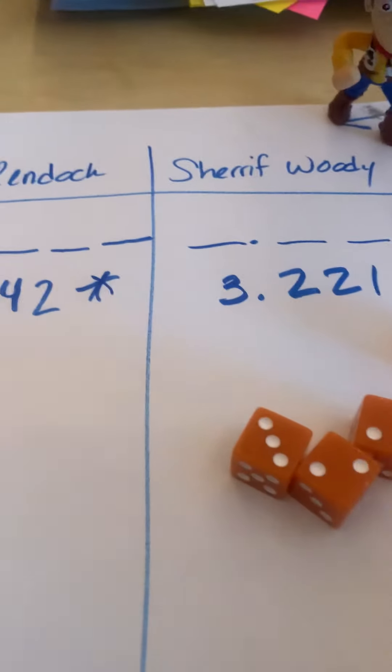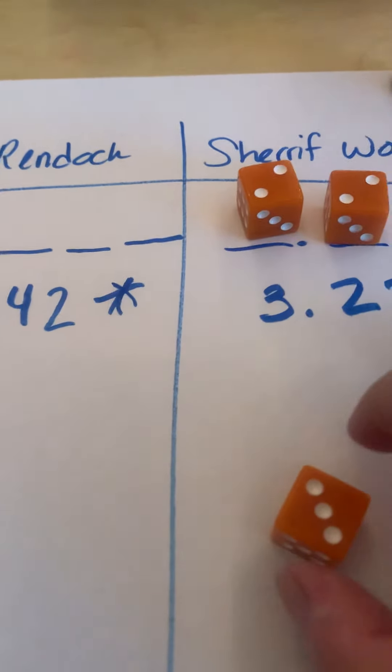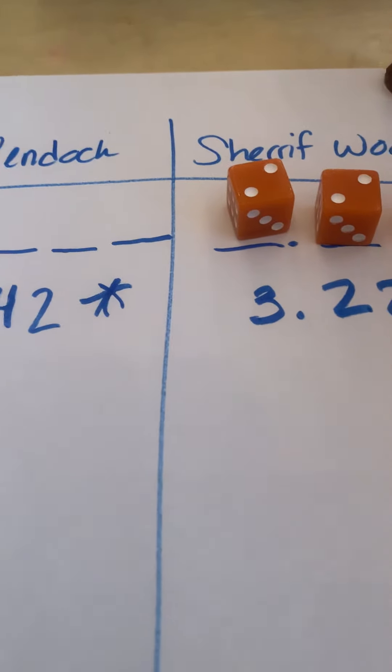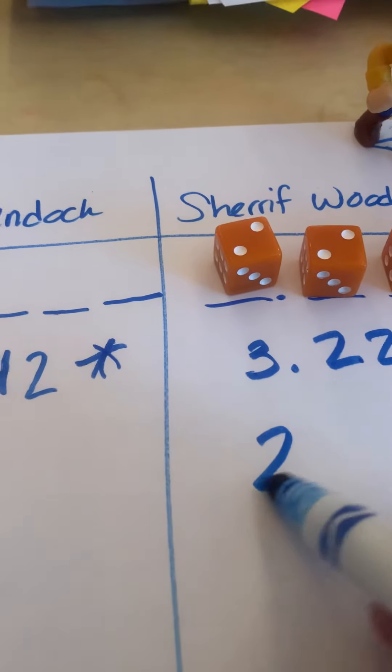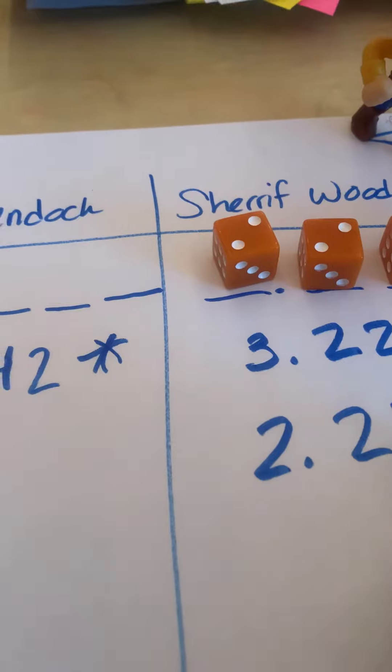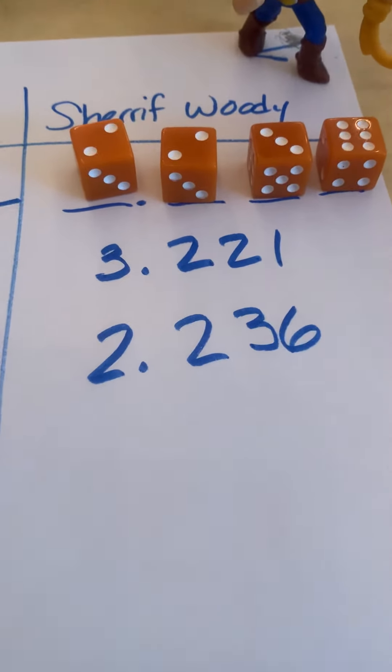Let's see, how about the whole number being two, and then the tenths being two, and then 36. All right, so let's write that down. So we've got two and 236 thousandths. That looks like the smallest one we can make.